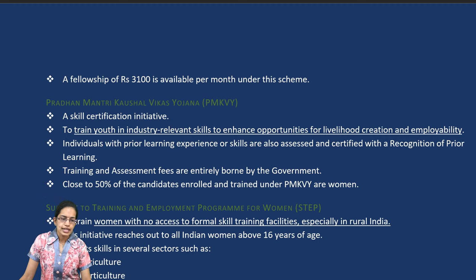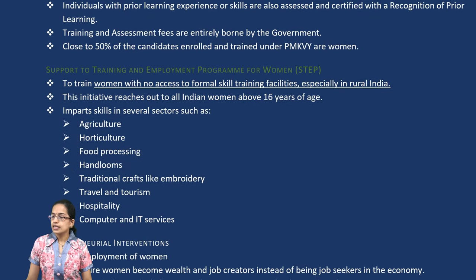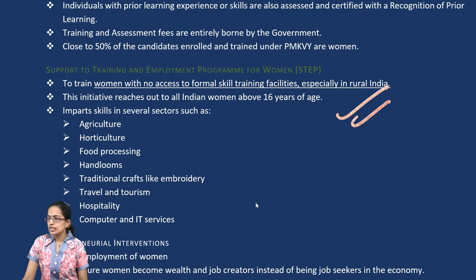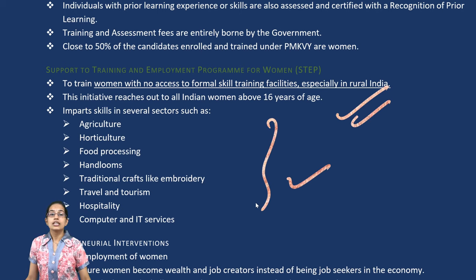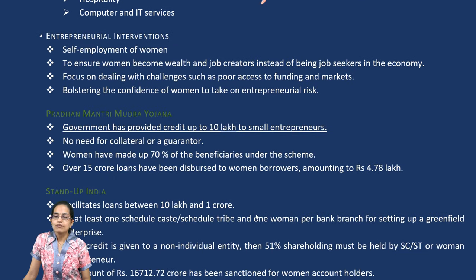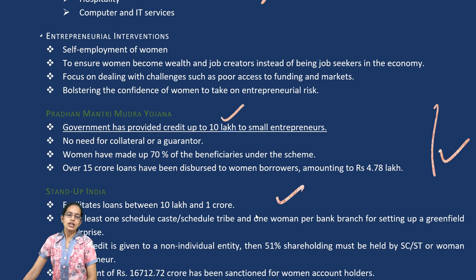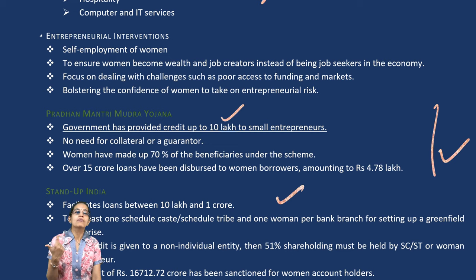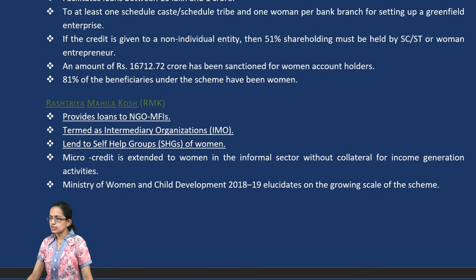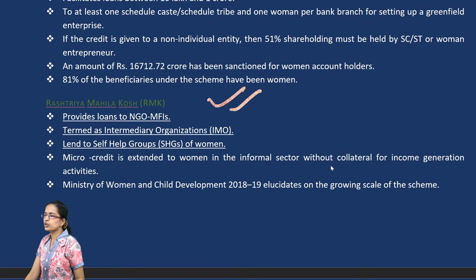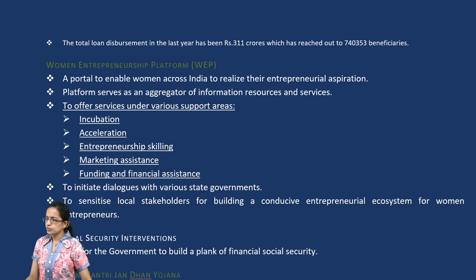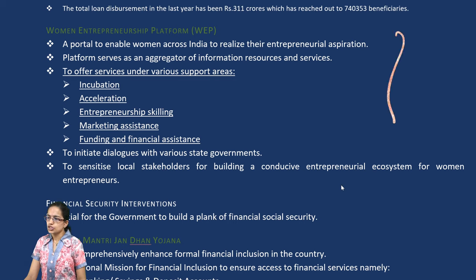The Pradhan Mantri Kaushal Vikas Yojana enhances employment and livelihood opportunities for women. The STEP program focuses on skill training across various sectors. For entrepreneurship development, the Pradhan Mantri MUDRA Yojana provides micro-credit up to Rs. 10 lakh for small entrepreneurs. Stand Up India facilitates loans from Rs. 10 lakh to Rs. 1 crore — at least one SC/ST and one woman borrower per bank branch. Rashtriya Mahila Kosh provides loans to NGOs and self-help groups.